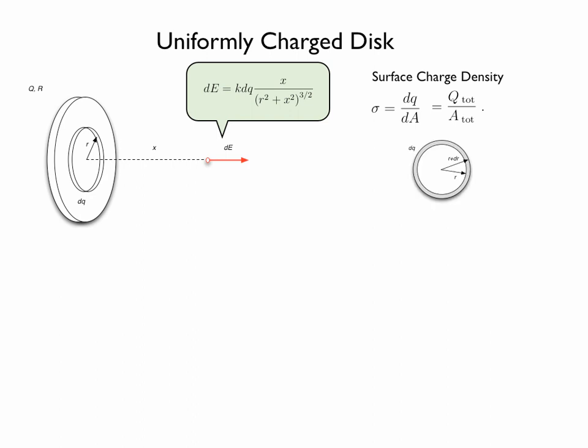Now the ring is not really infinitely thin — it has some finite thickness which we consider to be dr. In other words, the inner radius of the ring will be r and the outer radius of the ring will be r plus dr.